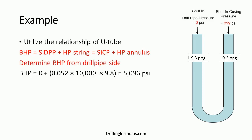Determine bottom hole pressure from the drill pipe side. As you can see, there is no shut-in drill pipe pressure, so the bottom hole pressure will come from hydrostatic pressure in the drill string only. Based on the equation, the bottom hole pressure is equal to 5,096 psi.